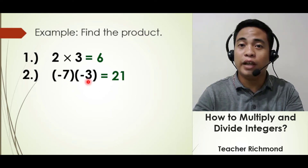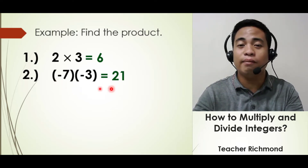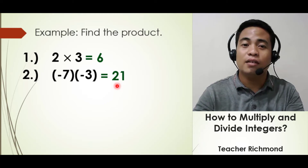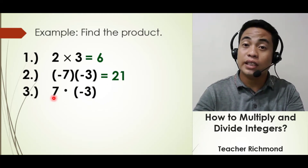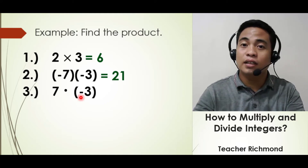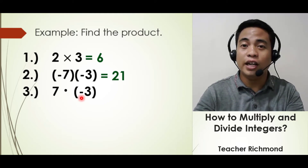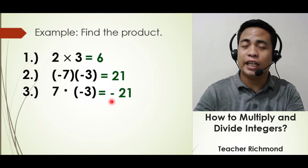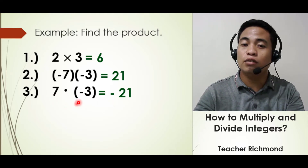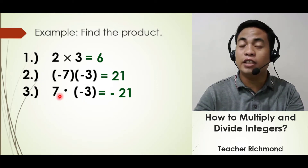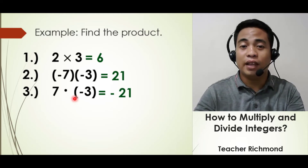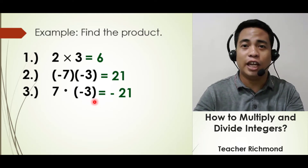Next example: 7 times negative 3 — what is the answer? The answer is negative 21. Why? Because the two integers have unlike signs: the first integer is positive 7 and the second integer is negative 3. When you multiply integers with unlike signs, the answer is always negative.